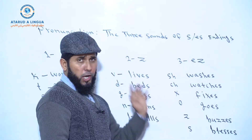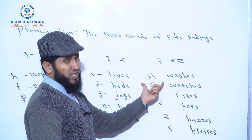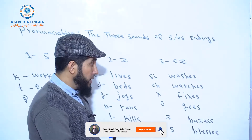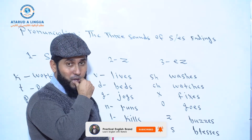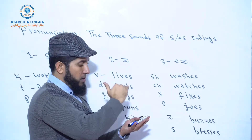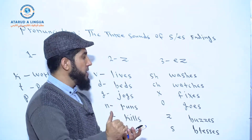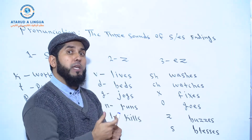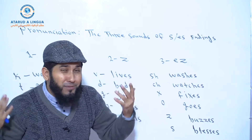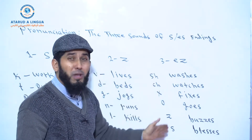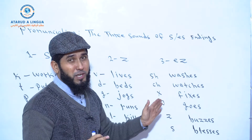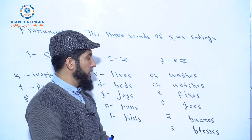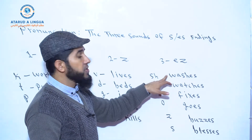Now if you have these specific letters or combinations at the end of a verb or noun, those words are pronounced with the IZ sound. The ES at the end is pronounced like IZ. I've heard a lot of students pronouncing these verbs or nouns incorrectly — many students say 'washess' or 'watchess' or 'fixess.' No — it's wash — washes.